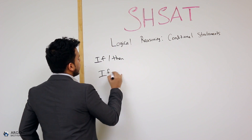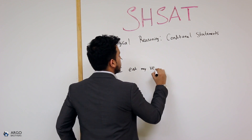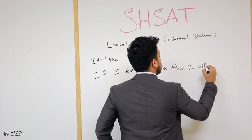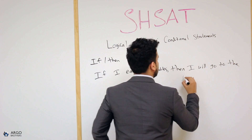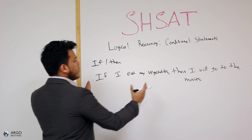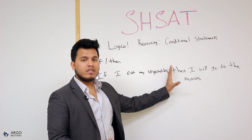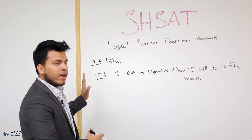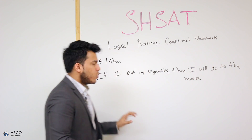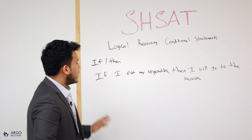Let's take a very simple example: if I eat my vegetables, then I will go to the movies. What you have to understand from the if-then statement point of view is that 'if' is your hypothesis — if I eat my vegetables — and the 'then' statement is your conclusion. Conditional statements always have a hypothesis section followed by a conclusion statement. So if I eat my vegetables, which is your hypothesis, then you can conclude that you will go to the movies.